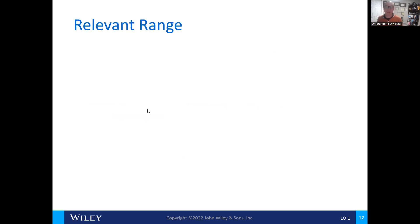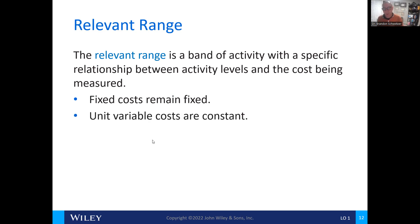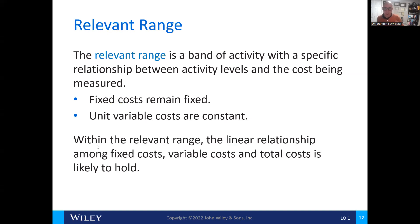A lot of costs have what we consider a relevant range of costs. This is a specific relationship between the activity and the cost being measured — within a range of costs. Fixed costs always remain fixed, and the unit variable costs are constant. Within the relevant range, the relationship between fixed and variable costs and total fixed costs is likely to hold constant.